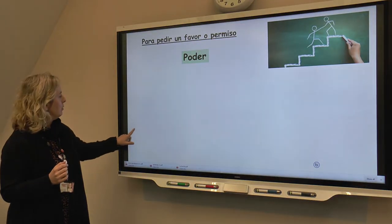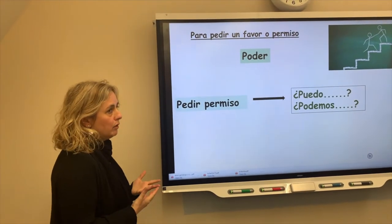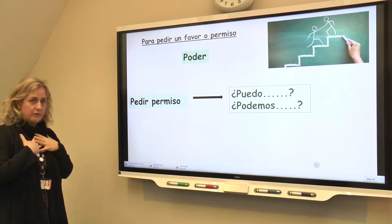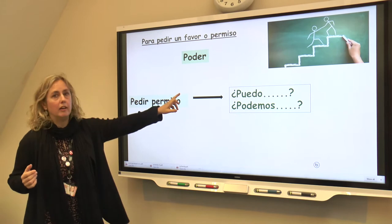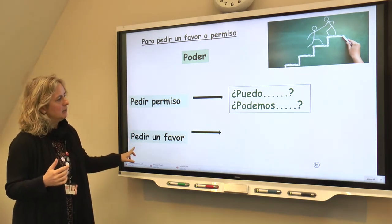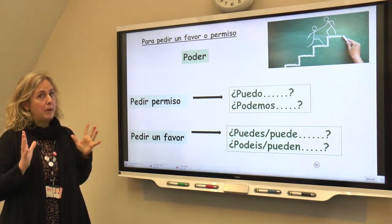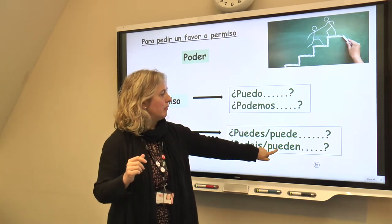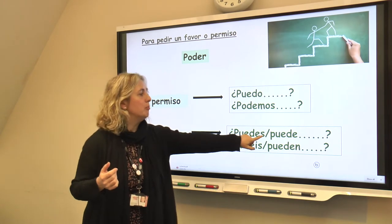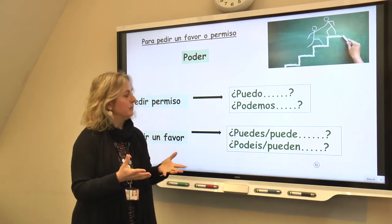Let's do permission first — permission to do something. Can I do something? For that we use puedo or podemos. Puedo is if it's just you; podemos if it's a group — can we, can I. For asking a favour, you're asking someone else to do something for you — in this case we use puedes, can you. As a group it's podéis. There's also the form for usted: puede — formal can you. And as a formal group: pueden.